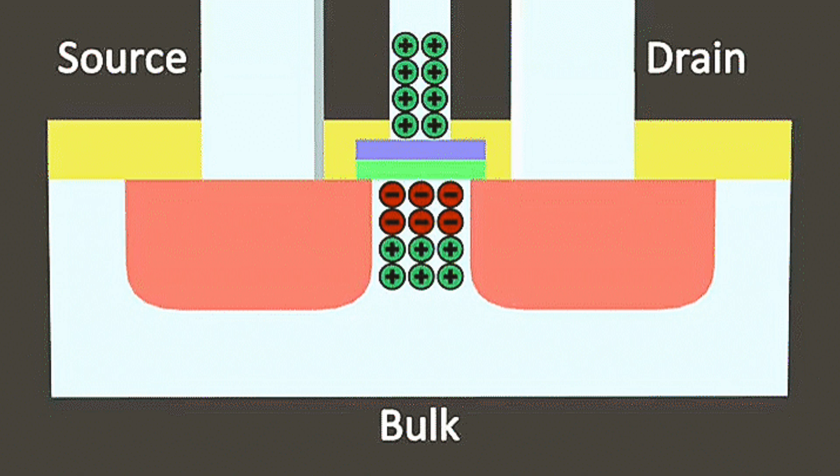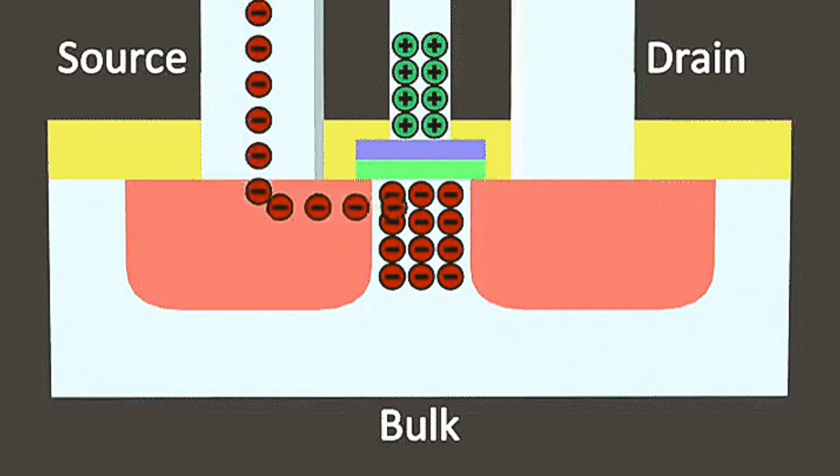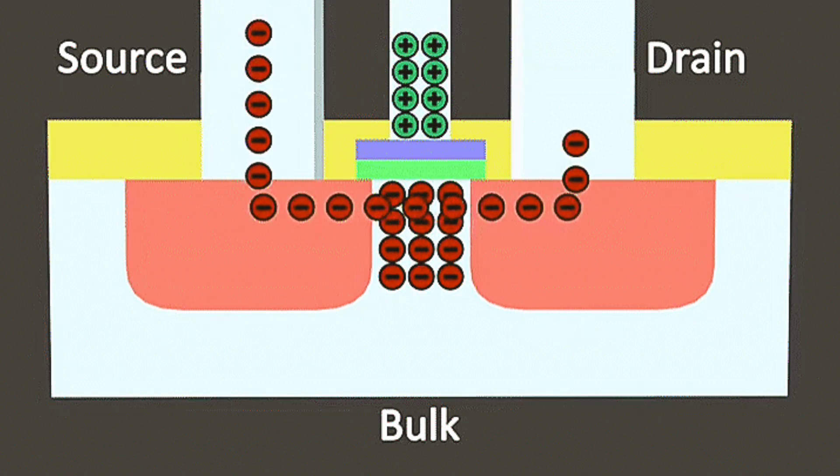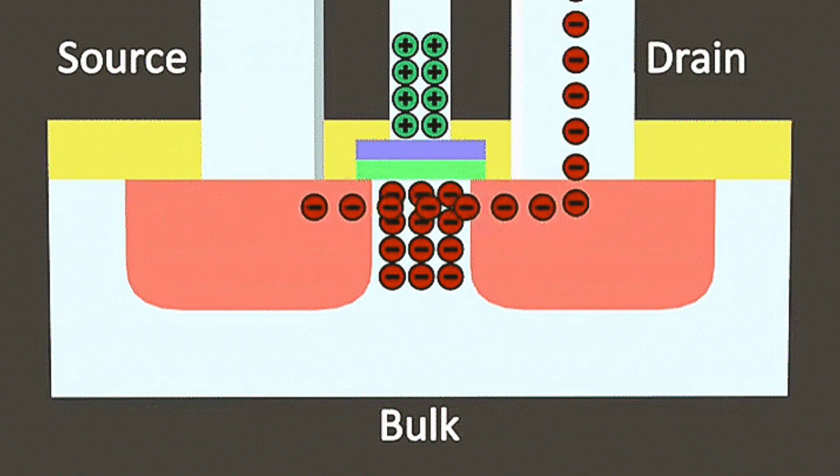This field pulls electrons from the P-type substrate, forming an N-channel between the drain and source. Once the channel forms, current flows freely between drain and source as long as the gate voltage remains above a threshold value.